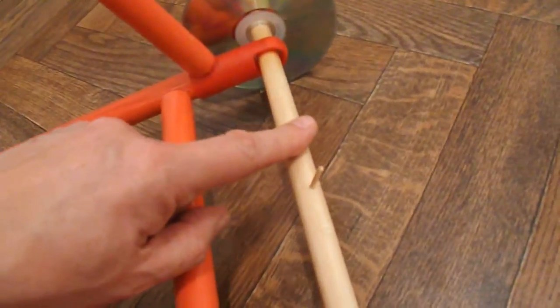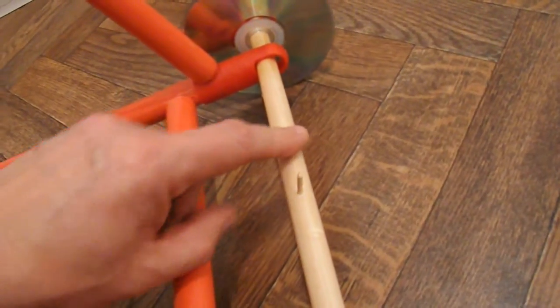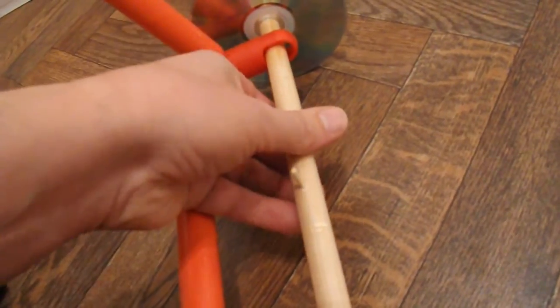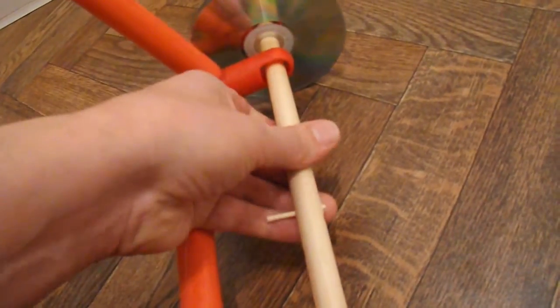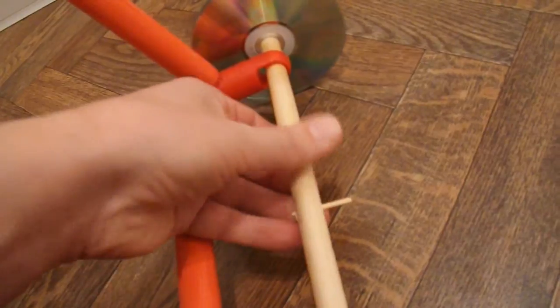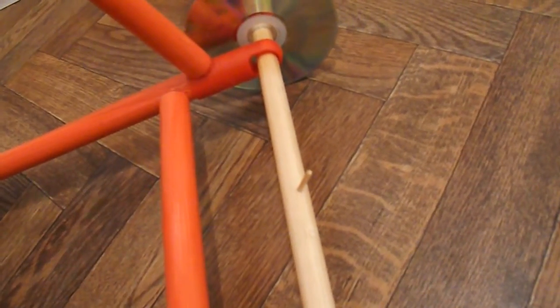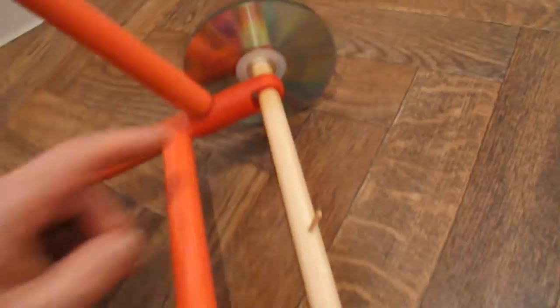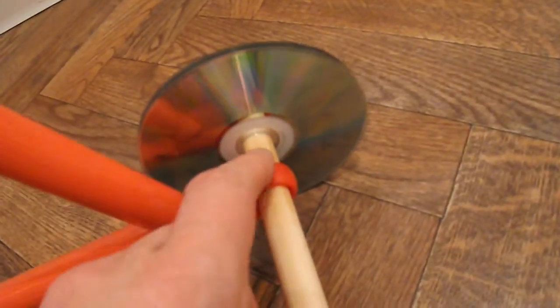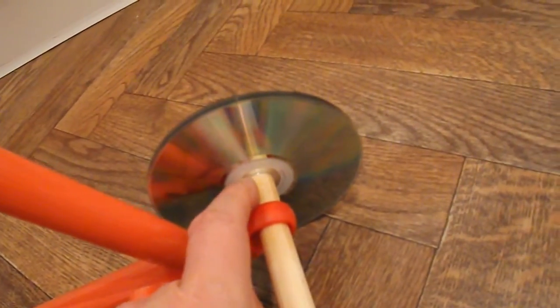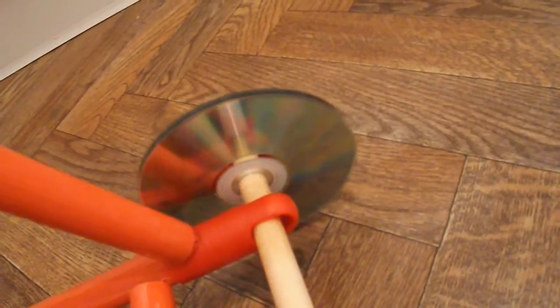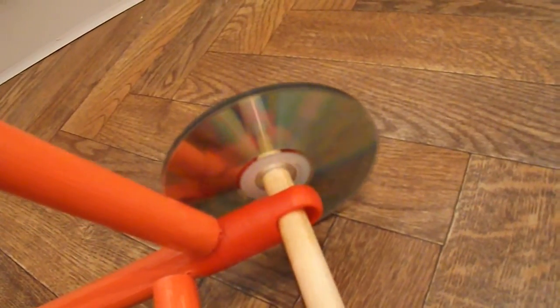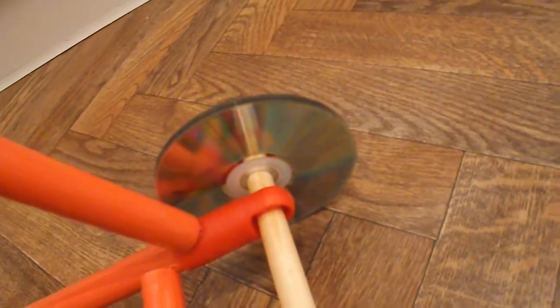The axle is some wooden dowel that I actually bought. I don't normally buy things specifically for their normal use but it happens to be exactly the right diameter to go straight into the hole in a CD so I don't have to do any gluing or anything. They're a really tight fit but they fit nicely.